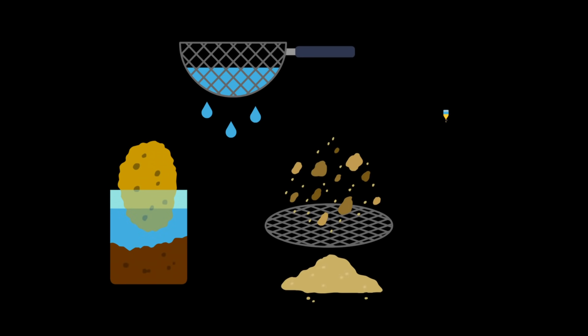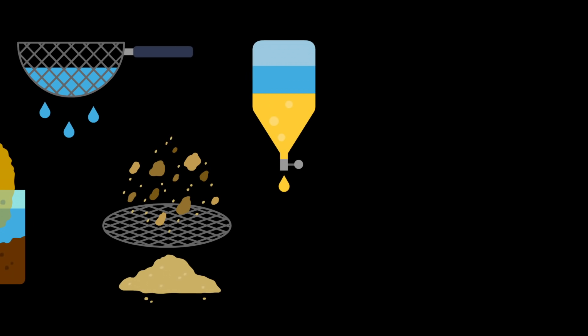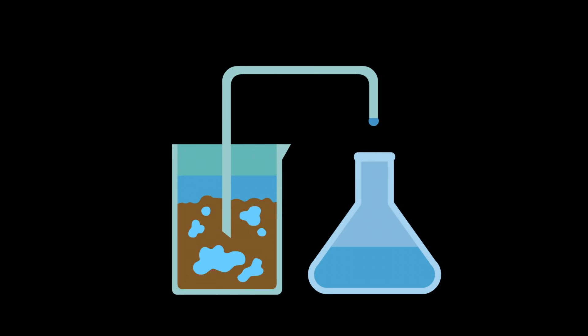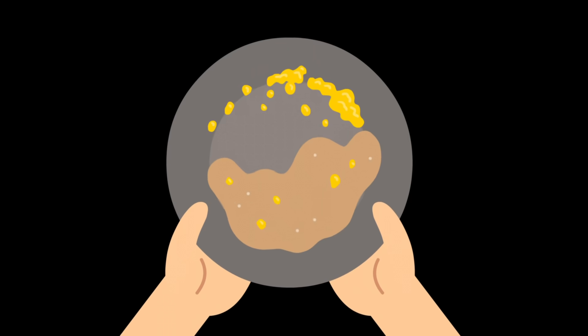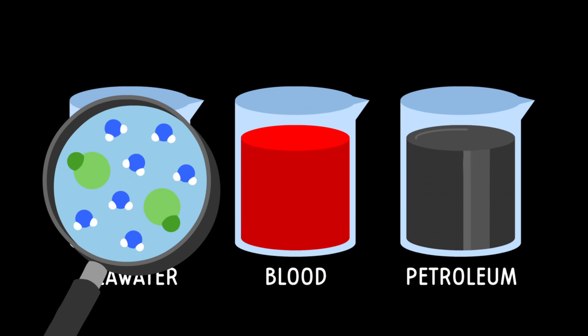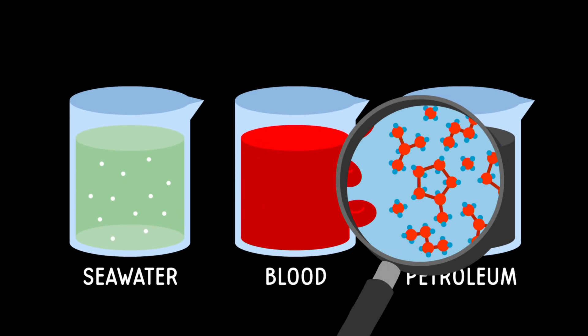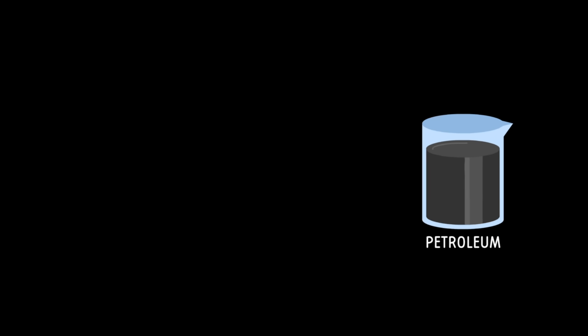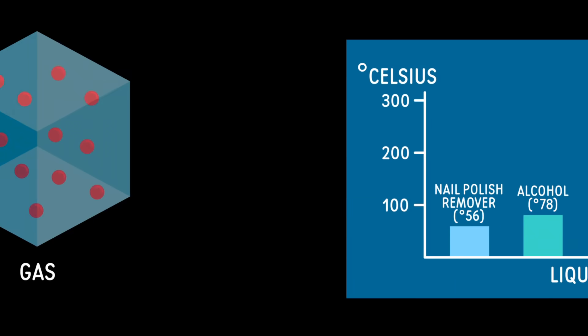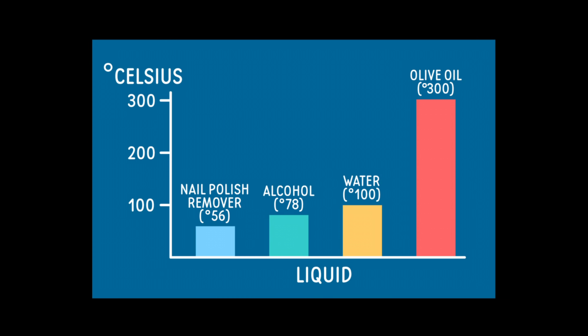Simple separation techniques apply to many physical scenarios, like separating cream from milk, extracting water from soil, or even sifting out flecks of gold from river sand. But not all mixtures are so easy to unravel. In some of those cases, we can exploit the differences between physical properties within a mixture, like particle size, density, or boiling point, to extract what's required.